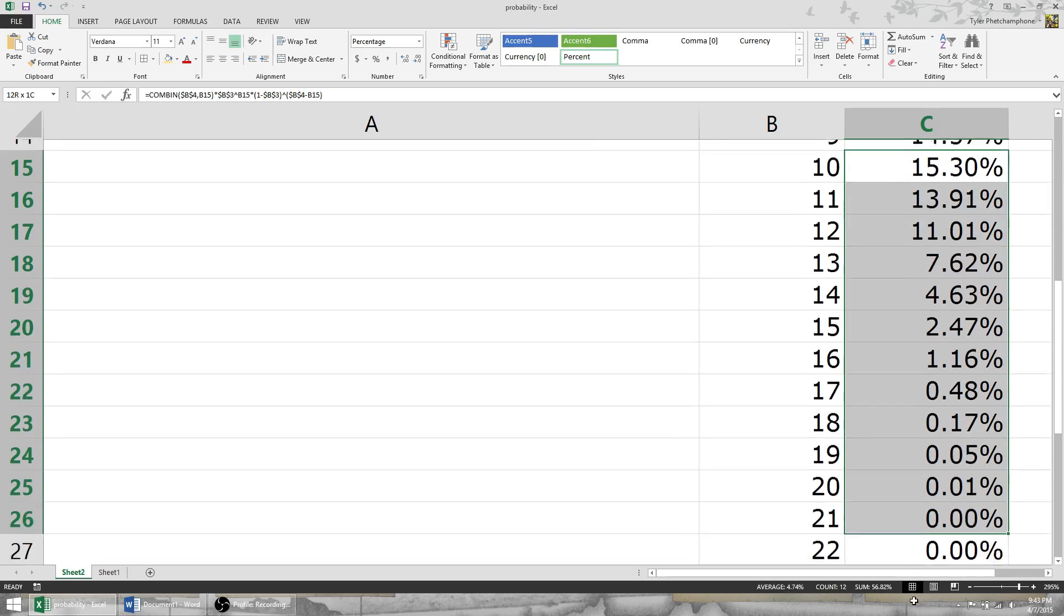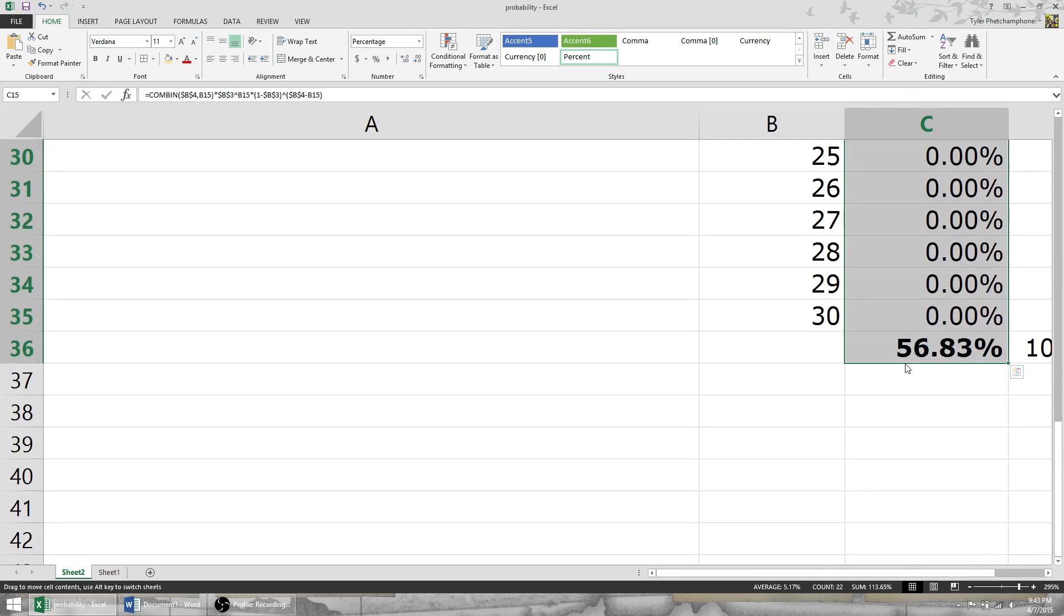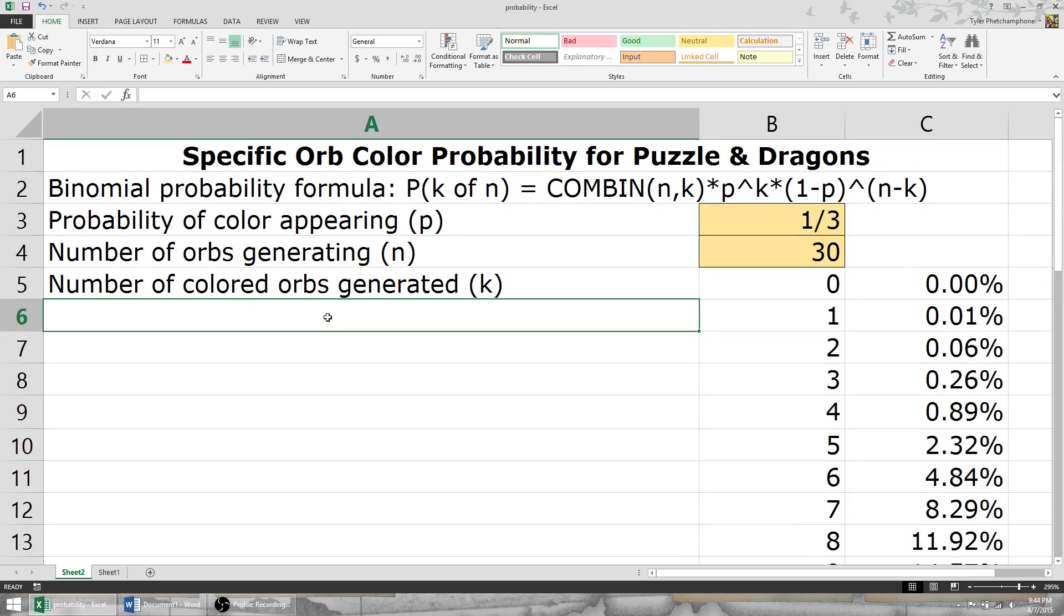What about 10 or more? What's the percent chance of that? The sum has a 56.83% chance of producing 10 or more purple orbs. Pretty sweet.